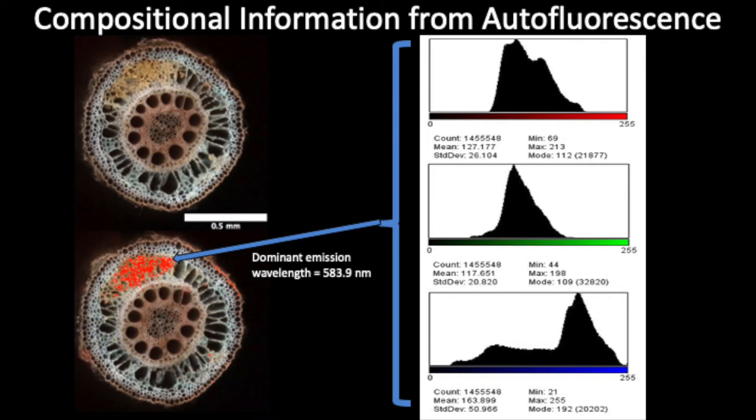For example, here we can differentiate between the chitinous cell wall of arbuscular mycorrhizae colonizing this maize root sample, which is highlighted in red, and the autofluorescent spectra emitted from the lignin and cellulose based walls of the plant tissue.